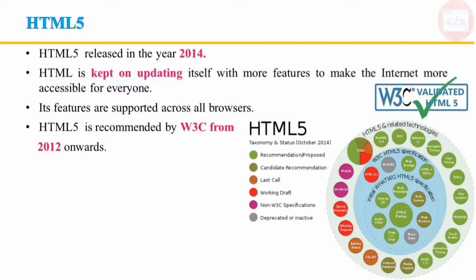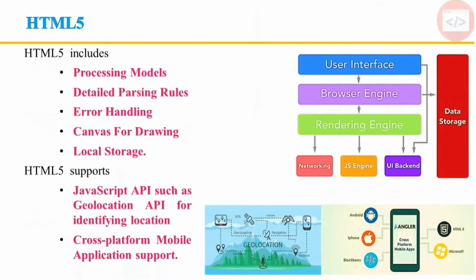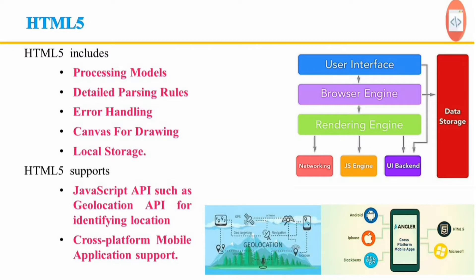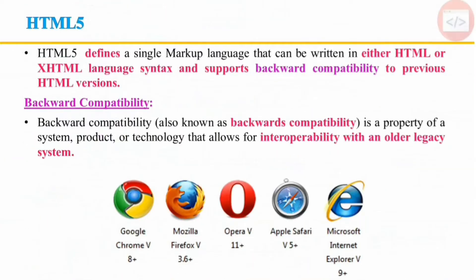W3 Consortium recommends HTML5 from 2012 onwards. It includes processing models, detailed parsing rules, error handling, canvas for drawing, and support for local storage. HTML5 starts supporting JavaScript APIs such as Geolocation API for identifying location, and cross-platform mobile application support. HTML5 defines a single markup language that can be written either in HTML or XHTML language syntax, and supports backward compatibility to previous HTML versions.